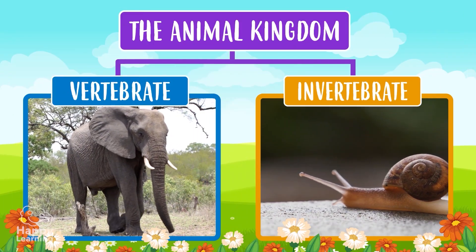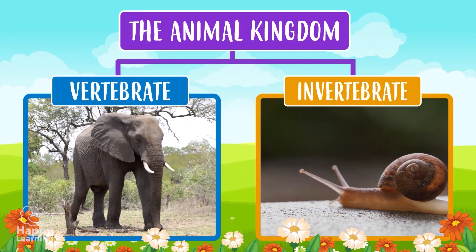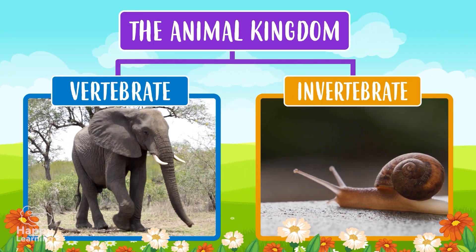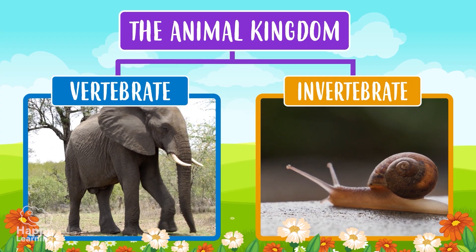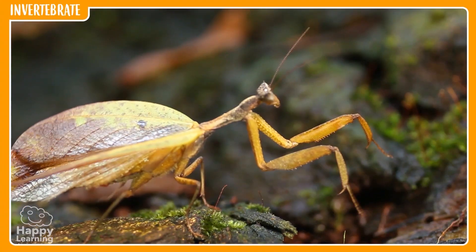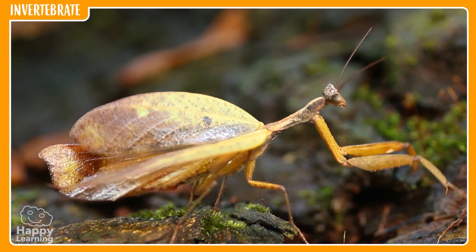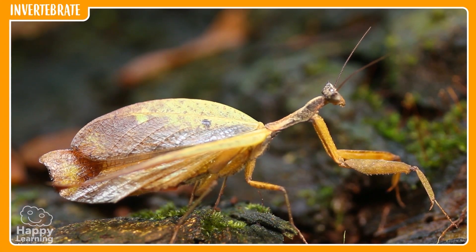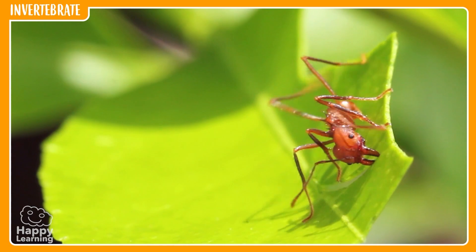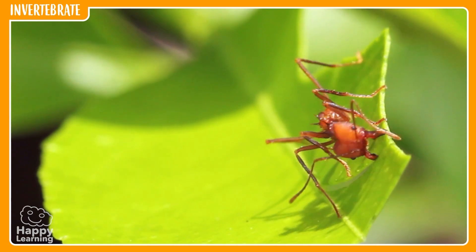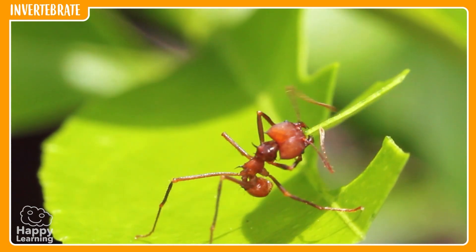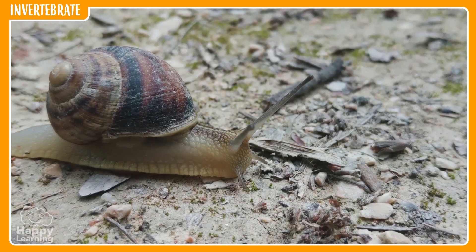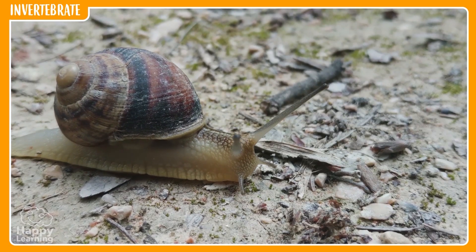Invertebrate animals, however, have no bones. They don't have an internal skeleton, like this ant or this slow snail.